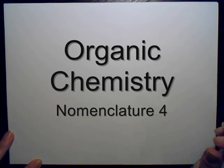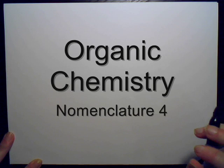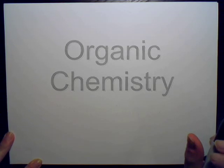The final thing we need to know about nomenclature in order to finish naming all of our alkanes, alkenes, and alkynes is a list of basically all of the functional groups that we might find on these alkanes. The functional groups are what makes the alkanes reactive.